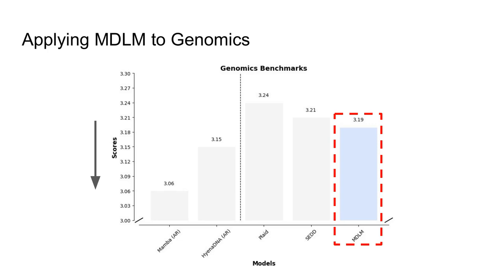In the work, we also apply this mass diffusion language model to a domain of genomics. This is a very different task with an extremely different architecture. Again, we see improvements over other diffusion-based approaches to text generation, and the approach is nearing the likelihood of autoregressive models.